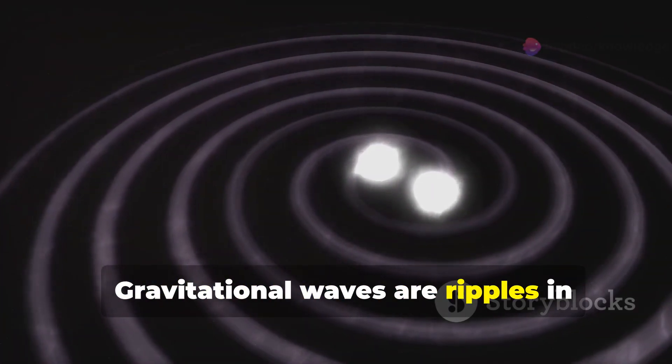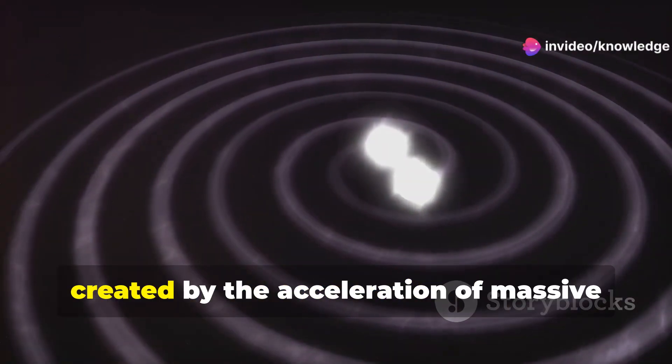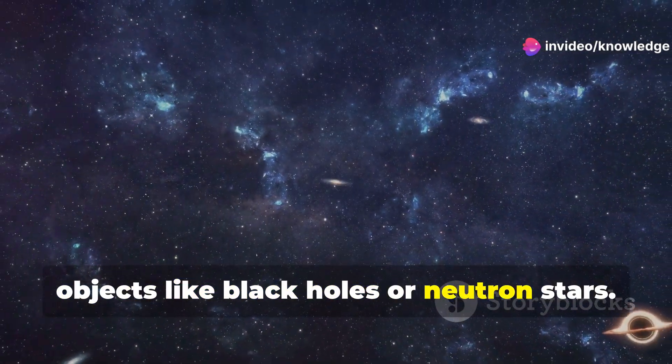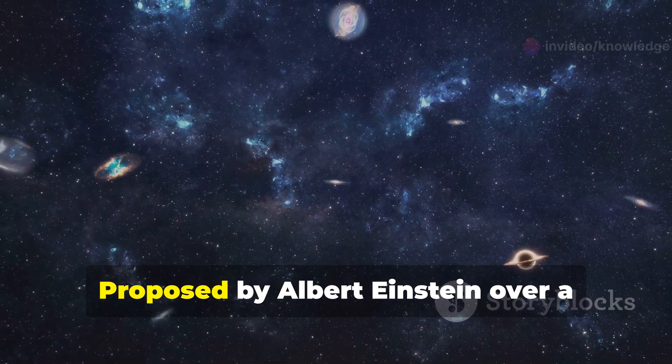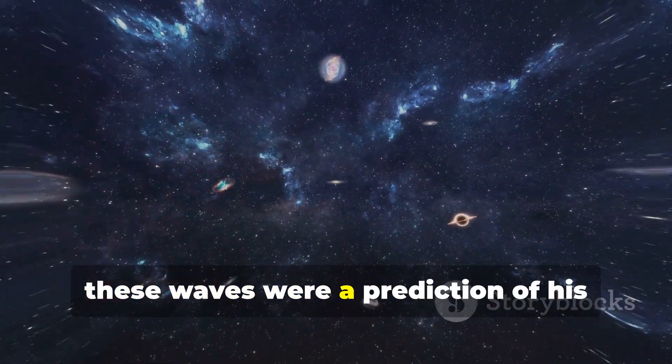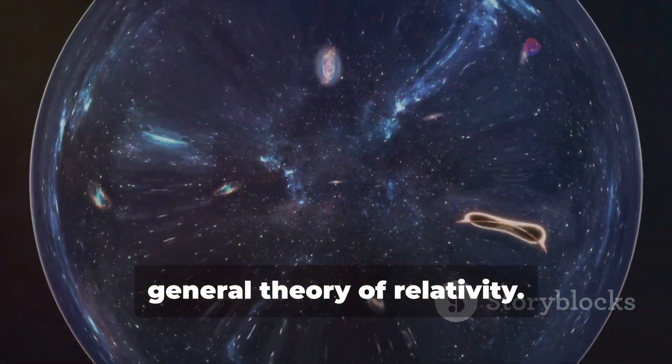Gravitational waves are ripples in space-time itself, created by the acceleration of massive objects like black holes or neutron stars. Proposed by Albert Einstein over a century ago, these waves were a prediction of his general theory of relativity.